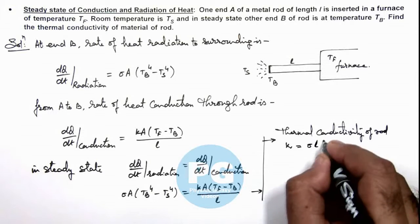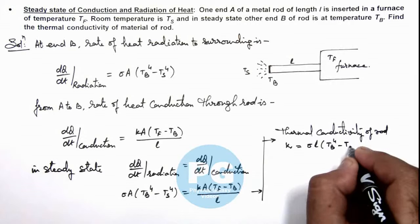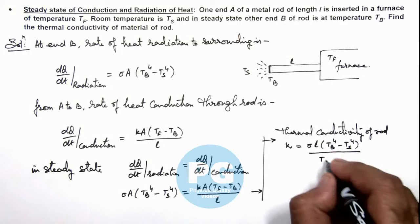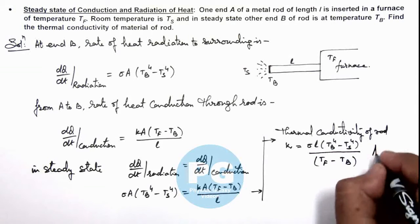multiplied by (T_b^4 - T_s^4) divided by (T_f - T_b). This is the result of this problem.